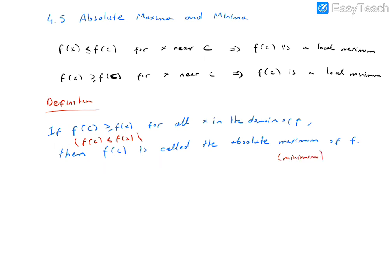An absolute maximum or absolute minimum is called an absolute extremum. The difference between the local and the absolute case is: in the local case, we focus on a small part near the point c, whereas in the absolute case, we look at the whole domain of the function.